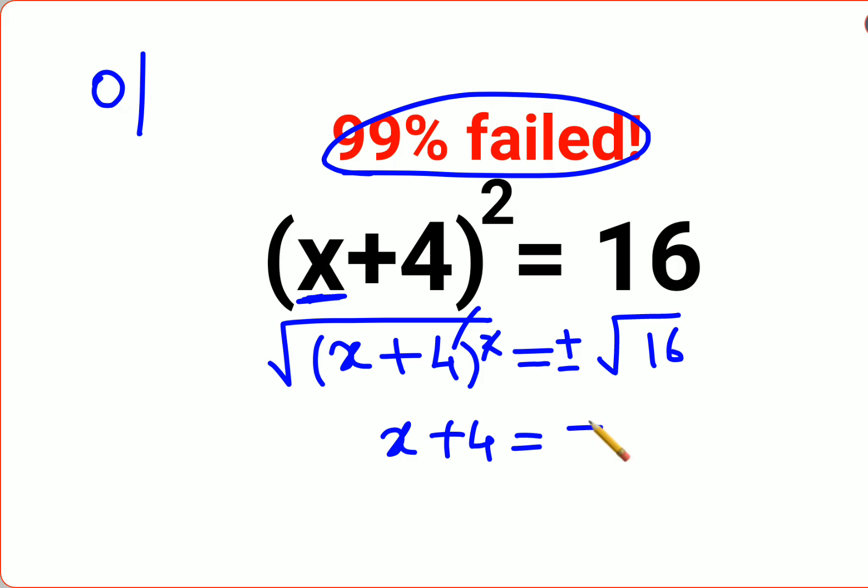The answer will always be in the form of plus minus. Root 16 is 4, so I can say either x plus 4 equals to 4, or I can say x plus 4 equals to minus 4.